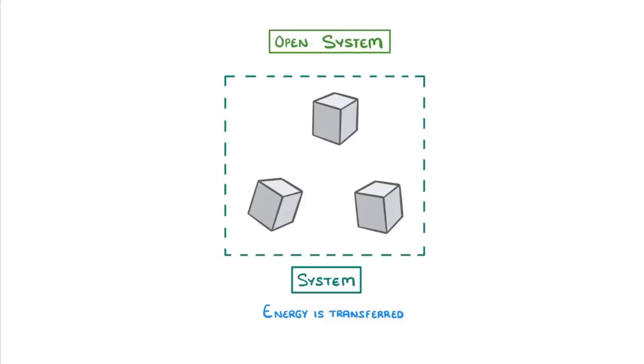In an open system, the matter of the system can exchange energy with the so-called outside world, which is just all of the matter that's outside of our system. This means that an open system can lose or gain energy as it interacts with the outside world.